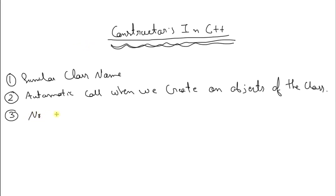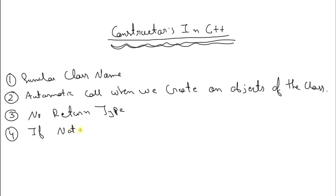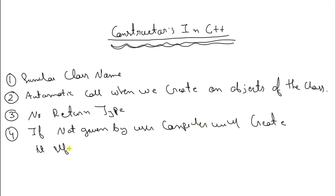The fourth point is: if we do not specify any constructor in our class, your compiler will do that for you. Your compiler will internally create the constructor for that class. So if not given by the user, the compiler will create it itself. These are the key points to keep in mind when dealing with constructors.